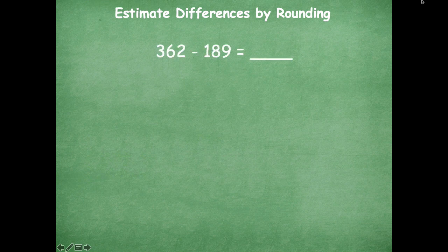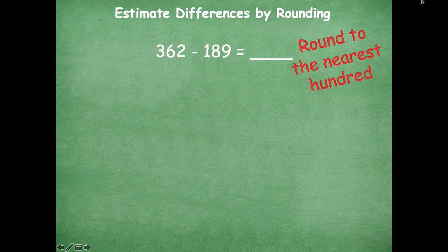So here we have 362 minus 189. I want you guys to round those numbers to the nearest hundred. So what is 362 rounded to the nearest hundred? It's 400 — it's past that midway point.